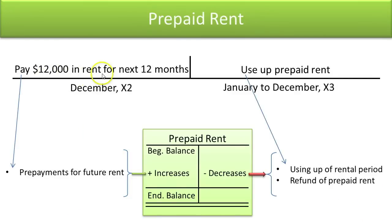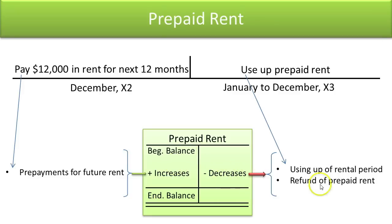Prepaid rent: if you pay $12,000 in rent now for the next 12 months, this prepayment is an asset because it will benefit you in the future through a payment made in the past. As the following year progresses and you use up that rental prepayment, the asset is reduced. If you receive a refund of the prepayment — say you move out early and they return five months of prepaid rent — you no longer have a prepayment because they gave you the cash back.